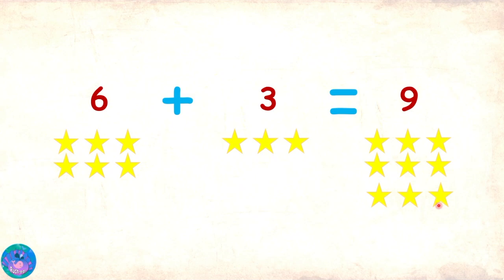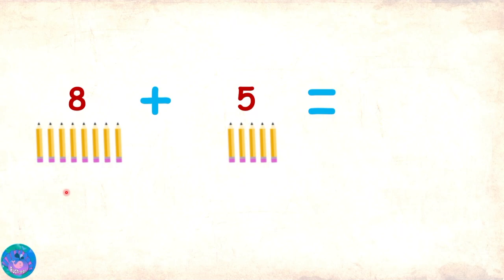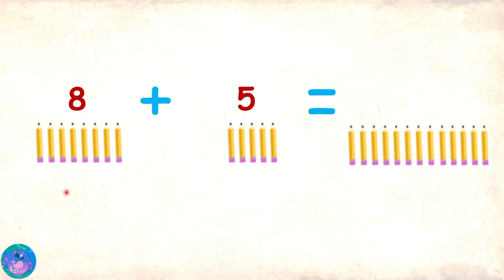Very good, Sam and Zoe. Let's try another one. Eight plus five. Can we do pencils this time? Sure. So, eight pencils plus five pencils. Let's bring them together and count them together. One, two, three, four, five, six, seven, eight, nine, ten, eleven, twelve, thirteen. So eight pencils plus five pencils is equal to thirteen pencils. Or we can say that eight plus five equals thirteen.